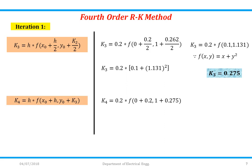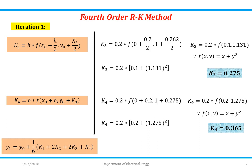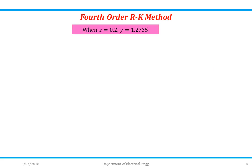For k₄, substituting h = 0.2, x₀ = 0, y₀ = 1, and k₃ = 0.275, we get k₄ = 0.2·f(0.2, 1.275). Substituting x = 0.2 and y = 1.275 into the given function, k₄ = 0.365. Using the formula y₁ = y₀ + (1/6)·(k₁ + 2k₂ + 2k₃ + k₄), substituting all values, we get y₁ = 1.275. Hence when x = 0.2, y = 1.275. This completes iteration number 1.